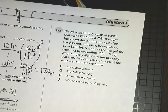Gladys wants to buy a pair of pants that cost $35 before a 20% discount. She knows she can find the cost after the discount in dollars by evaluating 35 minus 35 times 0.2. She thinks she can get the same cost by evaluating 35 times 1 minus 0.20. What property did Gladys use to justify that these two expressions represent the same cost after the discount?